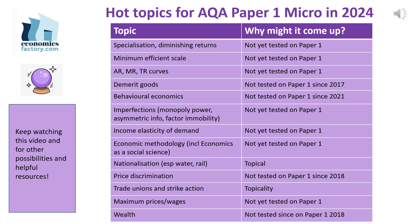These should be part of your revision. There's also been nothing on economic methodology yet since the paper was first tested in 2017. Something like 'explain why economics is considered a social science' for 15 marks is a question that many students would find difficult unless they're prepared for it in advance.